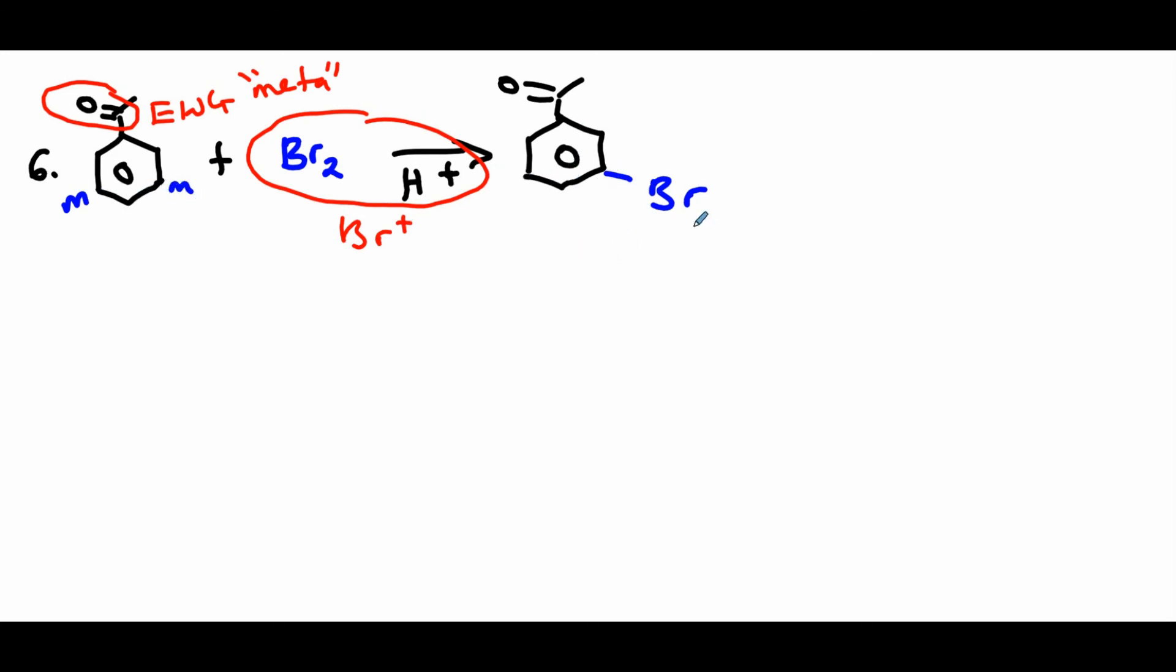So putting the bromine on the other side gets the same product. Okay, so in this video we've talked about electrophilic aromatic substitution, another way of doing halogenation on the ring. And so keep practicing so you get better at it. See you soon, bye!